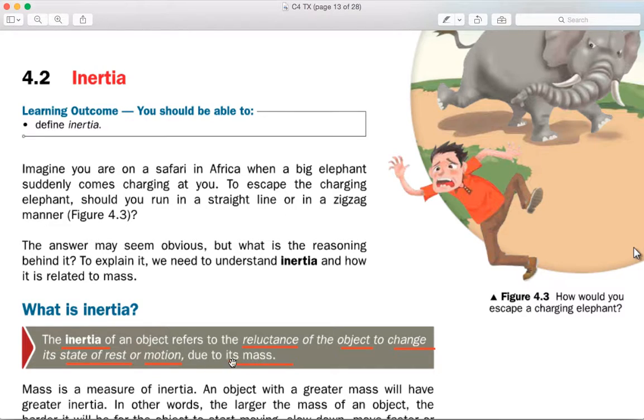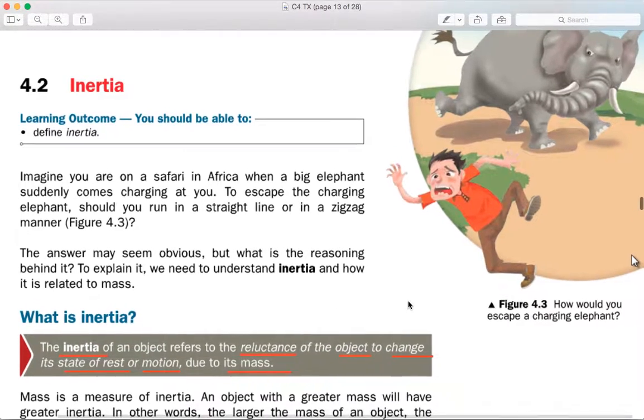And the reason for this is due to its mass. In other words, if a body has a lot of mass, we can also say it has a lot of inertia.